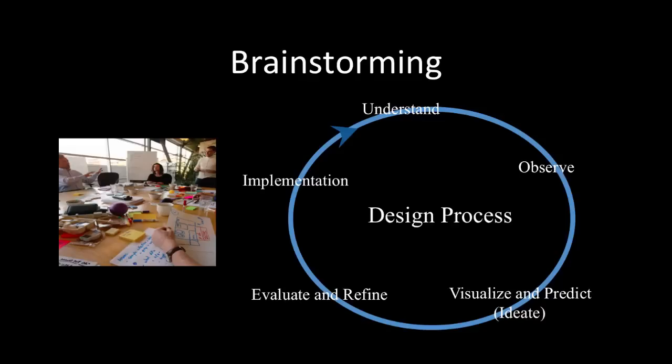Brainstorming is also a tool used in many design processes and can be a design process by itself. The graphic here is part of the IDEO design process — you'll see a link to a TED talk this week that goes into detail about their brainstorming process. Again, we have an iterative process: we try to understand what people need, we observe them, we visualize and predict what's going to happen, we evaluate and refine our design, and we implement it — then go back through that cycle. Users give feedback, we test and evaluate, and we try to generate a lot of ideas in brainstorming.